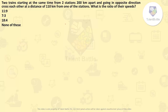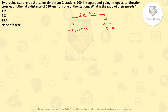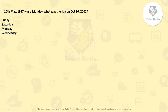Next question: Two trains starting at the same time from two stations 200 km apart go in opposite directions and cross each other at a distance of 110 km from one of the stations. What is the ratio of their speeds? Since they start simultaneously, in the same time train A covers 110 km and train B covers 90 km (since 200 − 110 = 90). The ratio of speeds = 110 : 90 = 11 : 9.